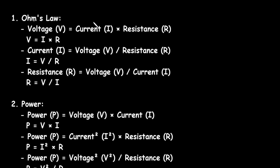These are some basic electrical engineering formulas. Number 1: Ohm's Law. Voltage V is equal to current I into resistance R. V is equal to I into R.